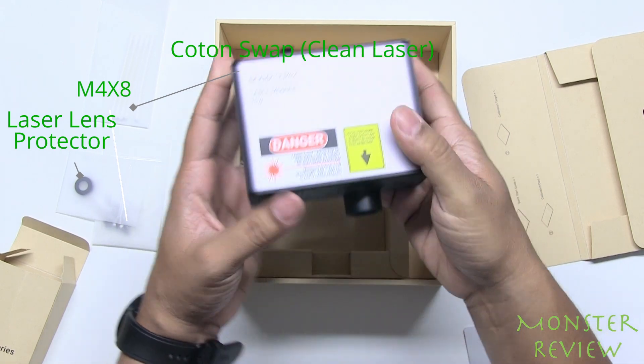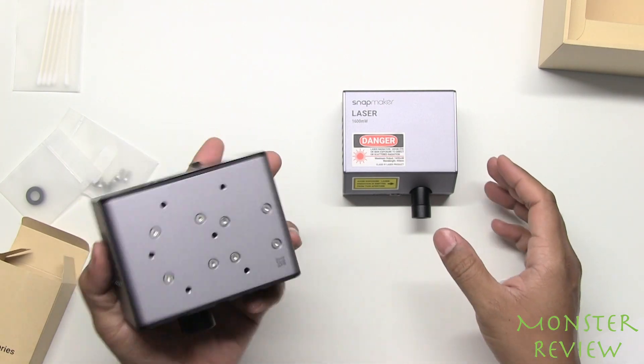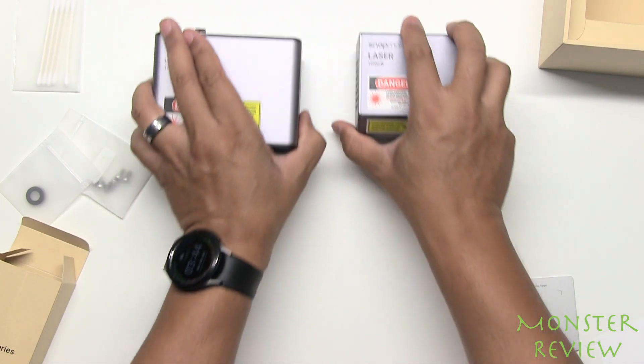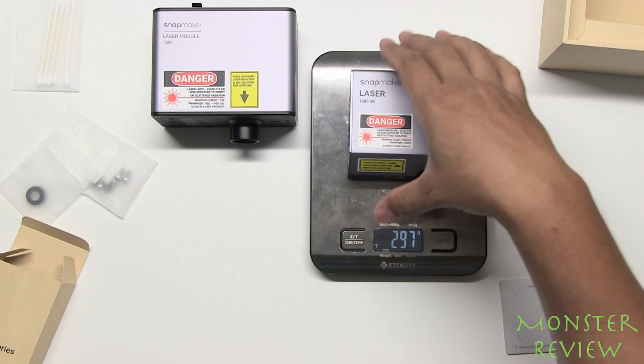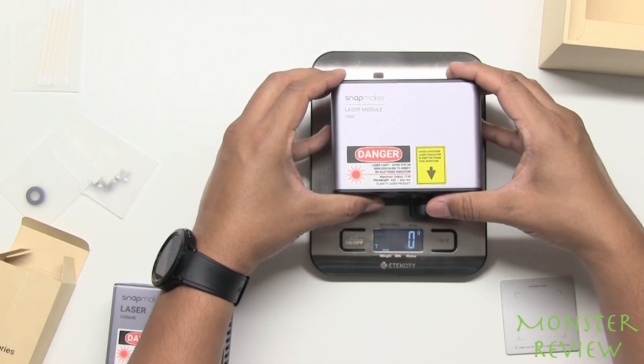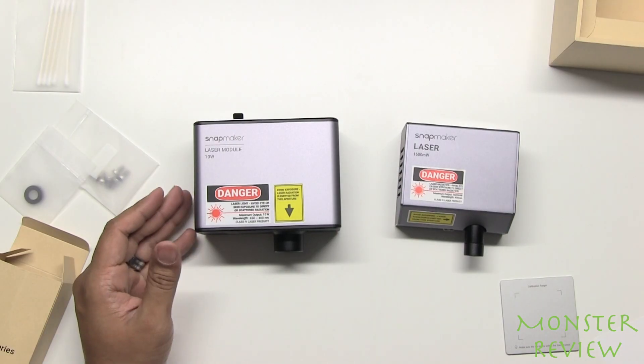And the laser module itself. This is a beast. This one is way beefier in terms of weight too. It is heavier. The 1600 milliwatt is at 29.7 grams and the 10 watt is at 62.7 grams, so it's almost double the weight.